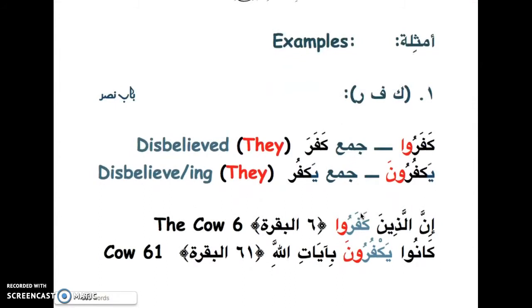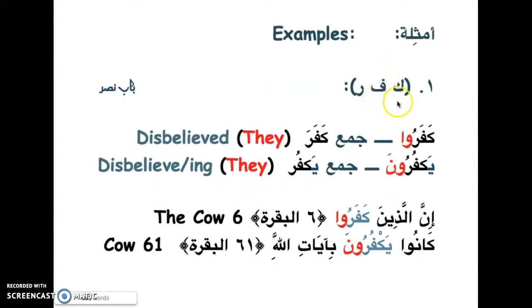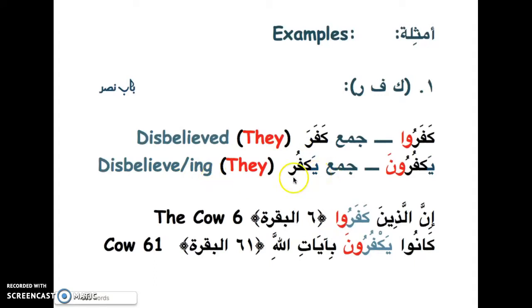The first example comes from the root 'kafara', from bab nasara. The singular form 'kafara' means 'he disbelieved' — one person. 'Yakfur' means 'he is disbelieving' or 'he disbelieves'. Now we're going to take this word and make it plural.